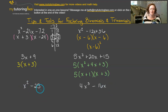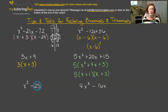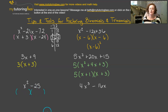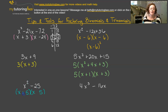Next, x squared minus 25. x squared is a perfect square, 25 is a perfect square, and they are being subtracted — so this is a difference of two squares. I separate it into binomials: x and x, and 25 splits into 5 and 5. In order to get that negative 25 at the end and no middle x term, one of these has to be positive and one has to be negative.